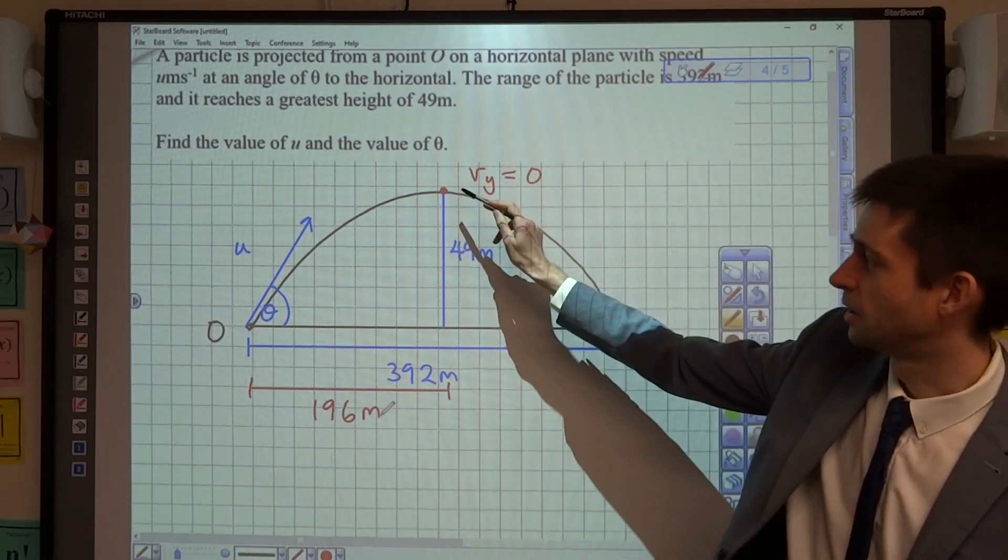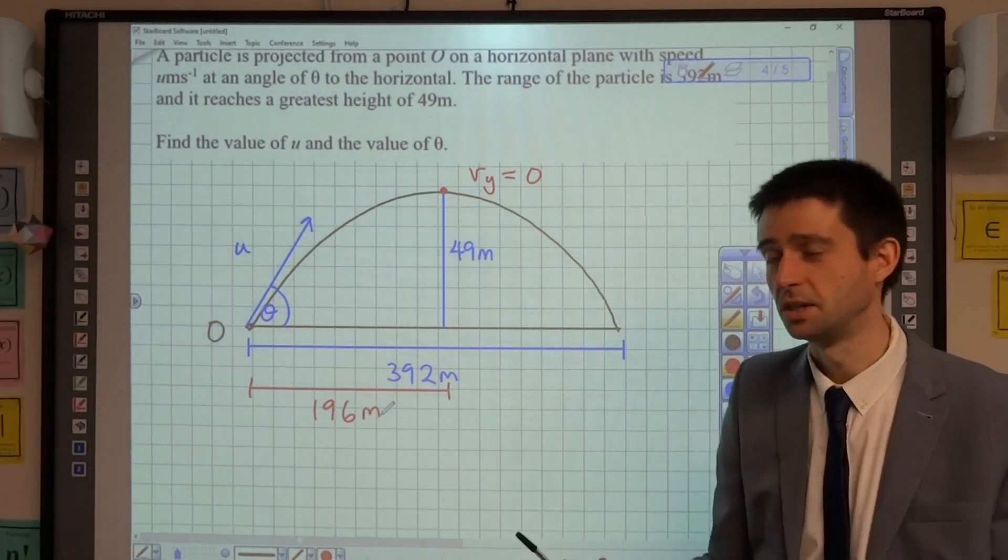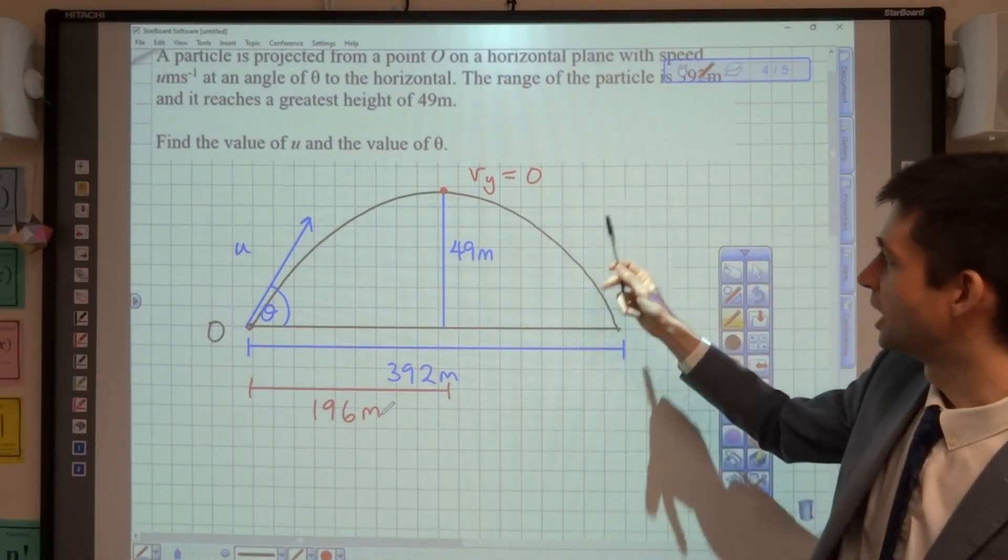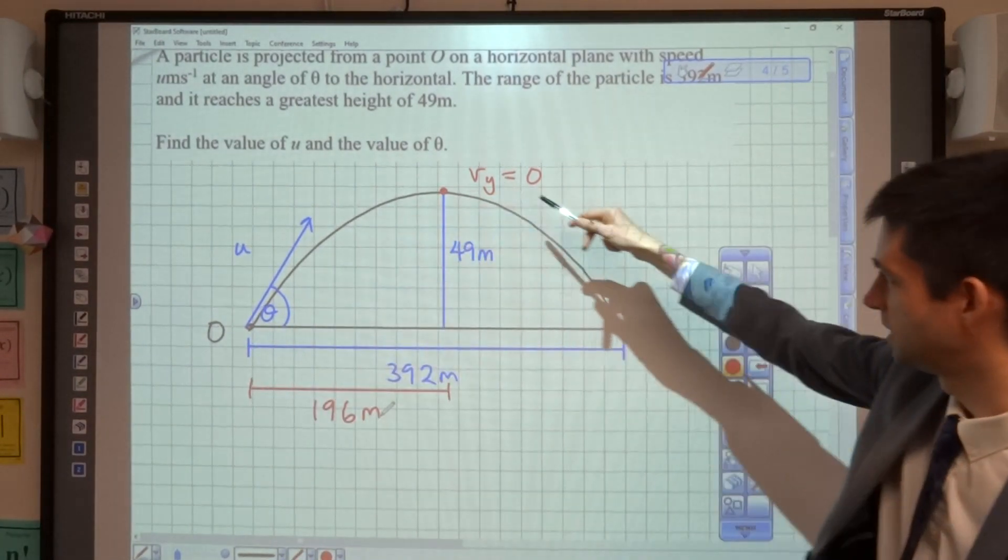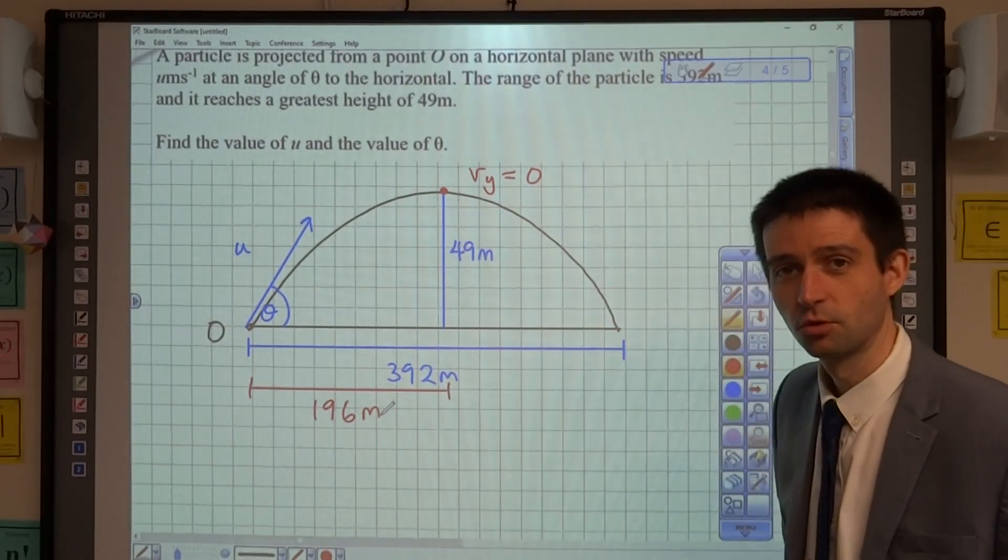Because at the point that the particle's at its greatest height, it will have travelled half the horizontal distance that it's going to travel in total. So the range is the distance from where it's projected to when it then hits the ground again. Half that, it'll be at its greatest height.